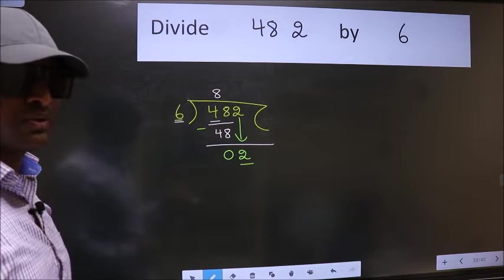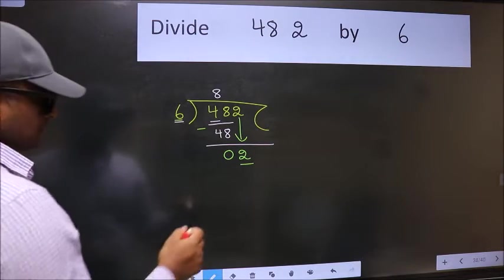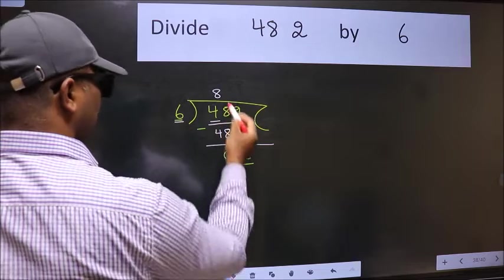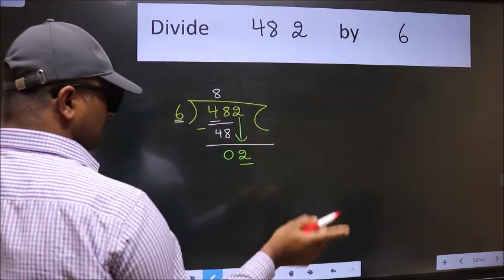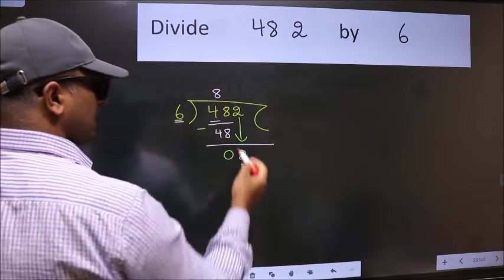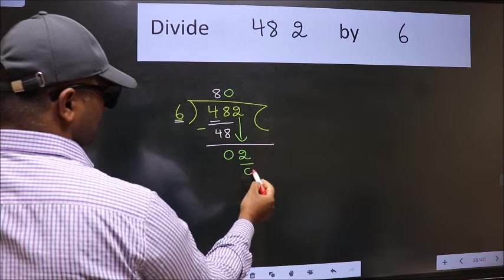Instead of that, what you should think of doing is: which number should we take here? If I take one, we will get six, but six is larger than two, so what we do is we take zero. So 6 into 0 is 0.